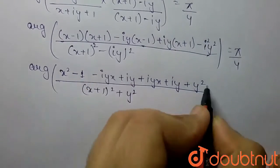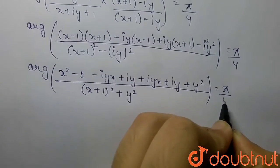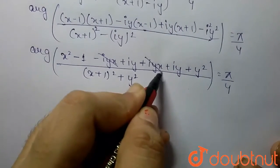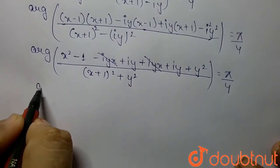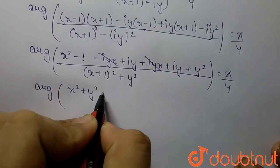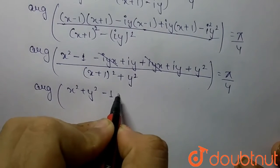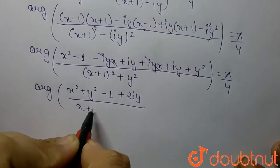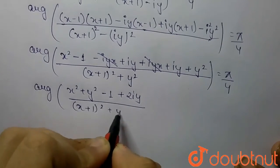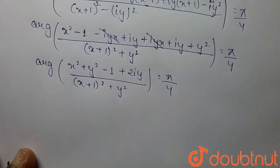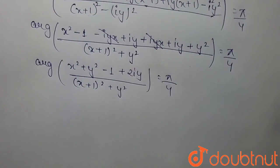Since i² = -1, the expression simplifies so that argument of (x² - 1 + 2iy) upon (x + 1)² + y² equals π/4. We separate the real and imaginary parts of this expression.